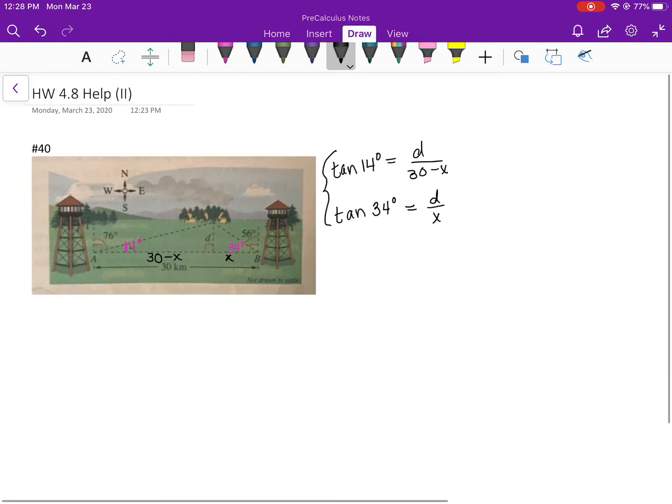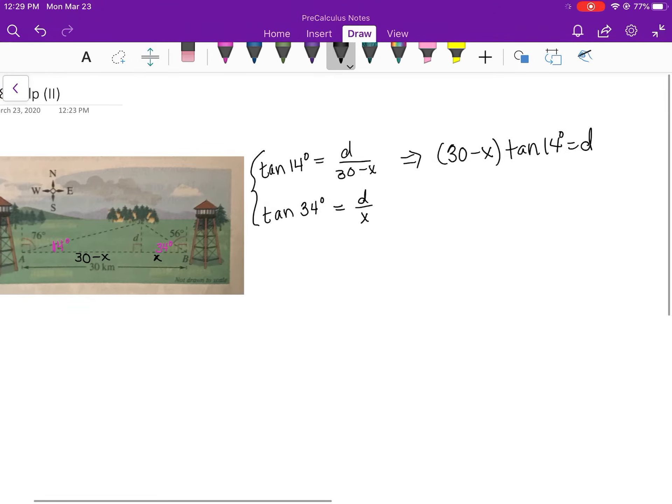Okay, so to start solving for X, 30 minus X tangent of 14 equals D. And then 30 minus X is D divided by the tangent of 14 degrees.